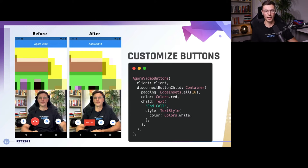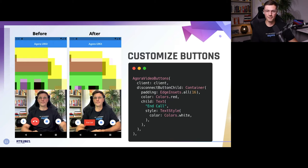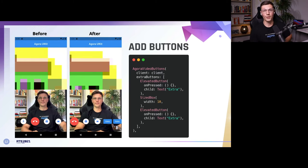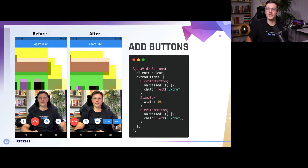You can also customize the button widgets themselves. In this section we had an end call button with a nice icon and circular layout — but if you want to make it boxy and not fit the style of the other buttons, you have the freedom to do that. You do that by picking whichever button you want to replace and changing the widget in there; in this case it was the disconnect button widget. If the default buttons aren't good enough, there's also a field called extraButtons where you can add in whatever widgets you want.